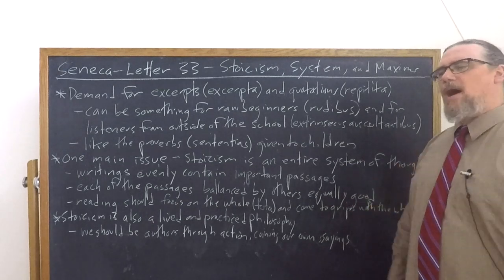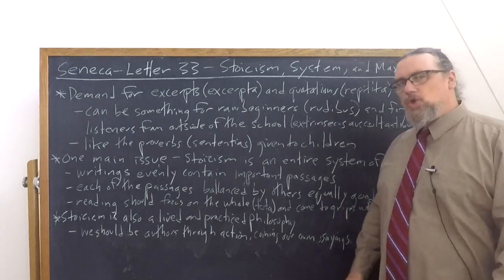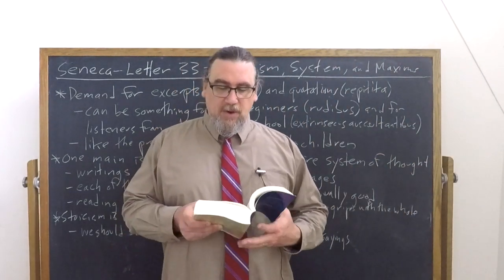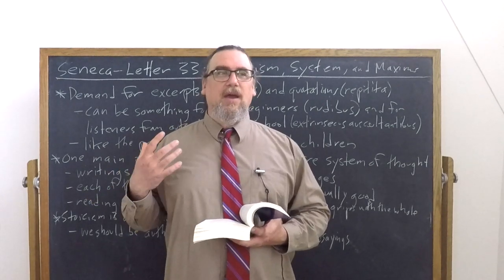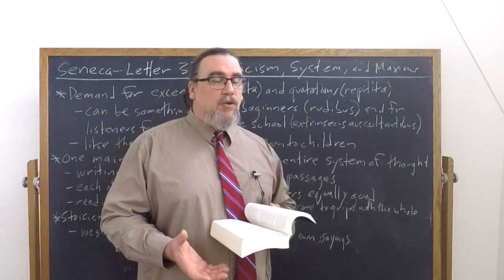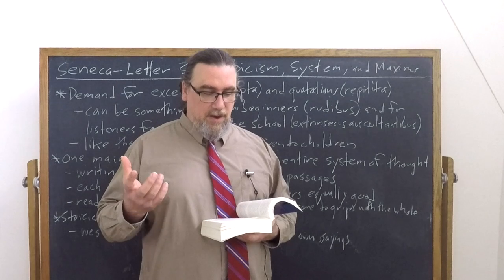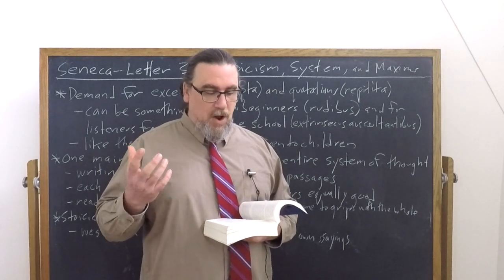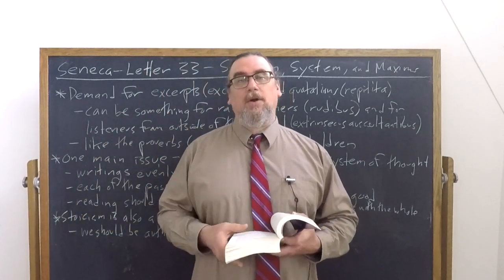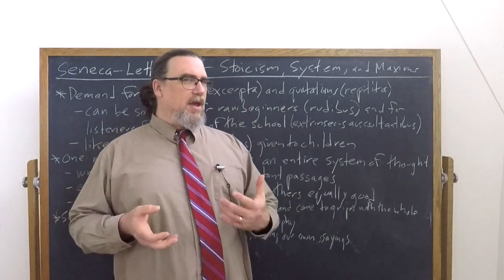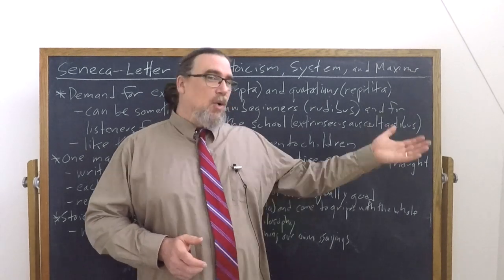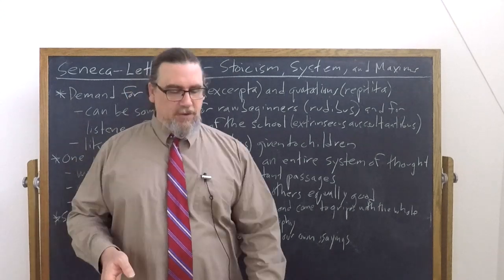He says that these are like the Proverbs, the sententias, given to children. And the Greeks had a word for these, chreias. These are things that you could have like ready to hand and you give them to kids because kids are actually not smart enough, at least at that point, to put everything together. He says that they are what a child's mind is able to encompass, not yet having room for anything larger. This is a bit of a problem if this is what grown adults are going to take Stoicism to be because Stoicism is much more than that.